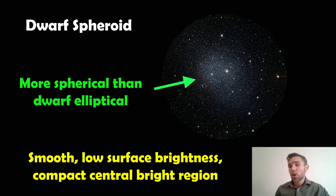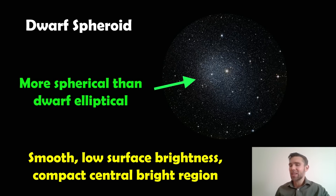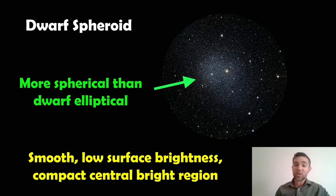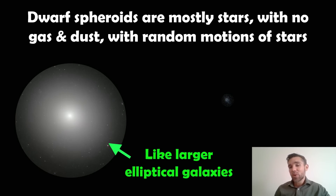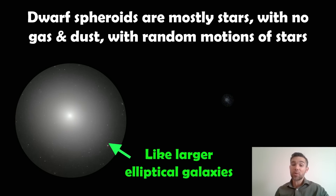Spheroidal dwarf galaxies are more spherical than dwarf ellipticals. They're smooth in appearance — meaning a lack of features like spiral arms — and have a compact central bright region, being brighter in the centre than toward the outer parts. Same as with larger ellipticals, they're mostly stars with little gas and dust and have random motions of stars, with no net rotation or disk-like dynamics.